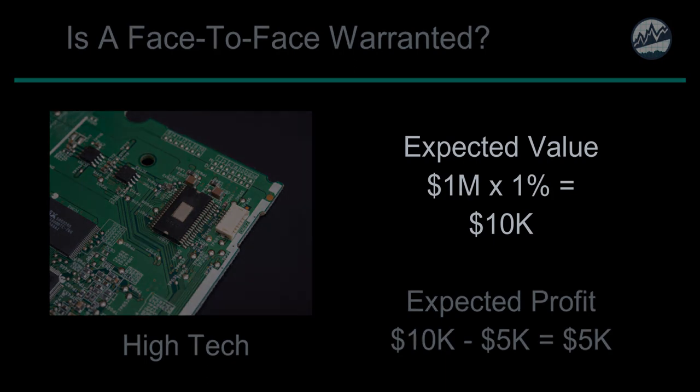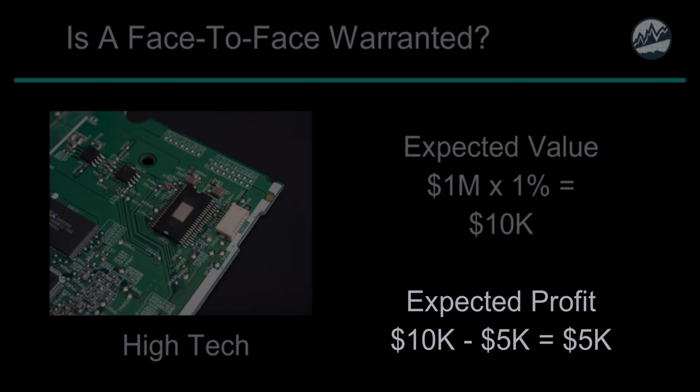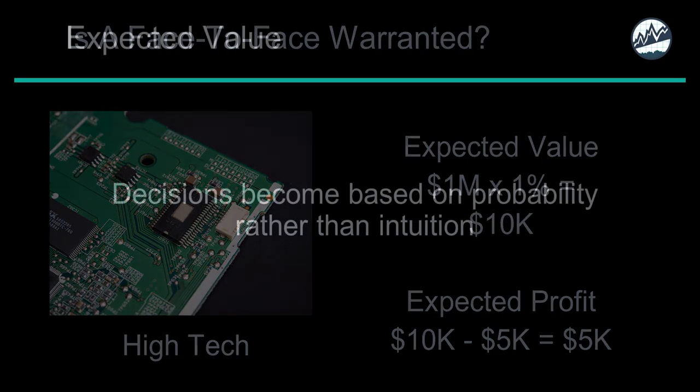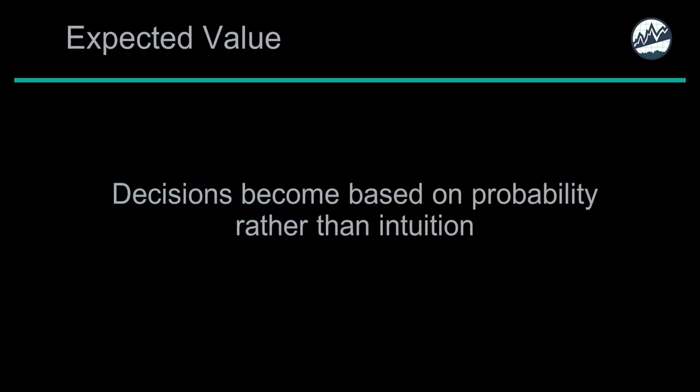Applying expected value, we multiply the probability of a win — 1% — by the profit of the win, which is $1 million. This total is $10,000, the expected benefit of the decision excluding any cost. If our total spend for the face-to-face meeting and quotation process is $5,000, it makes sense to take the meeting because it's lower than the $10,000 expected benefit. Decisions become based on probability rather than intuition. The astute business scientist wants to know the expected value even with a 1% hit rate.